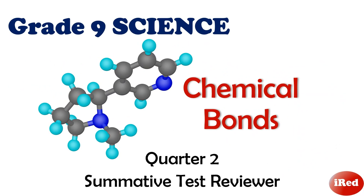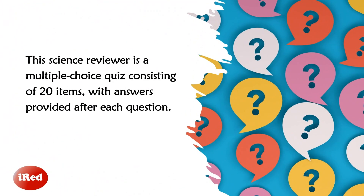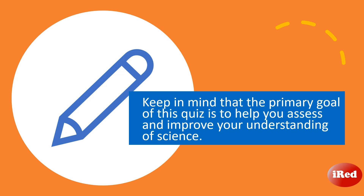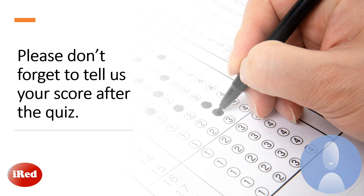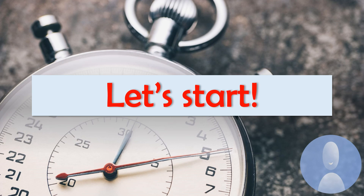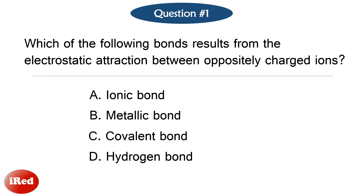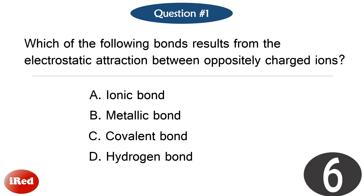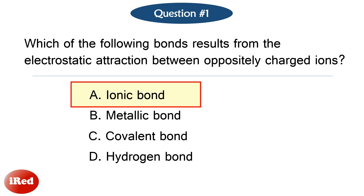Question number 1. Which of the following bonds results from the electrostatic attraction between oppositely charged ions? The correct answer is letter A, ionic bond.